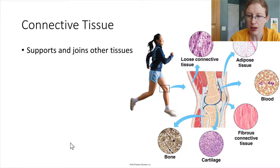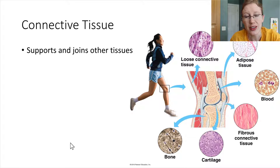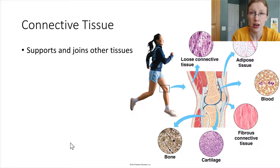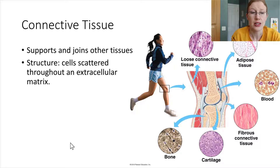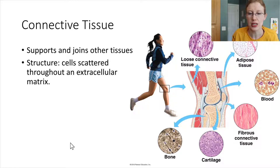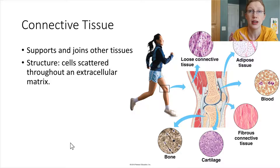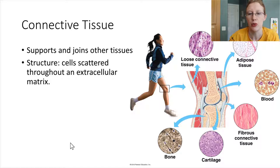There are a number of different types of connective tissue, shown in the figure here. What they all have in common is that the cells are scattered throughout some type of a matrix. So instead of the cells being packed tightly together and connected directly, they sort of live in this mesh network.